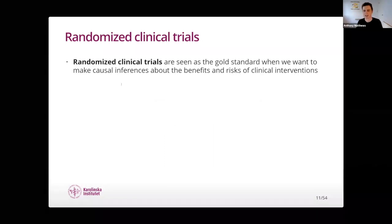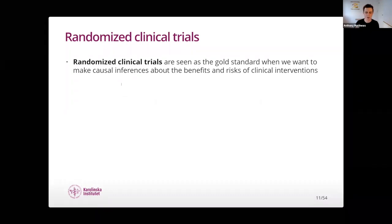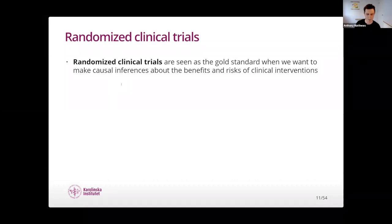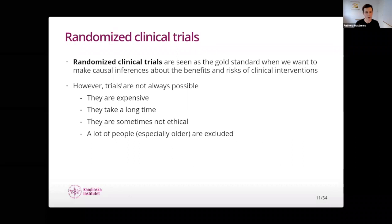The first randomised clinical trial in medicine was published in 1948 in the British Medical Journal: 'Streptomycin Treatment of Pulmonary Tuberculosis,' with Austin Bradford Hill as an author. Since then, randomised clinical trials have become the main way to evaluate the clinical effectiveness and safety of medical interventions. When a clinician needs to make a decision about who to give a treatment to, they look for a randomised trial to help answer questions about efficacy and safety within certain populations.